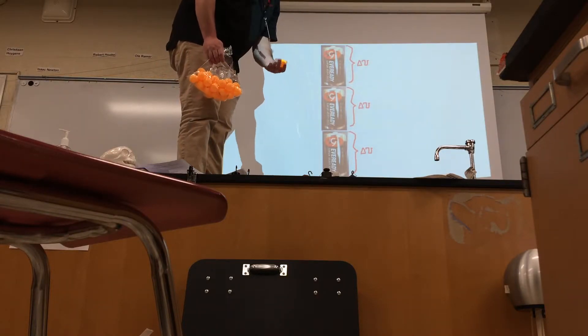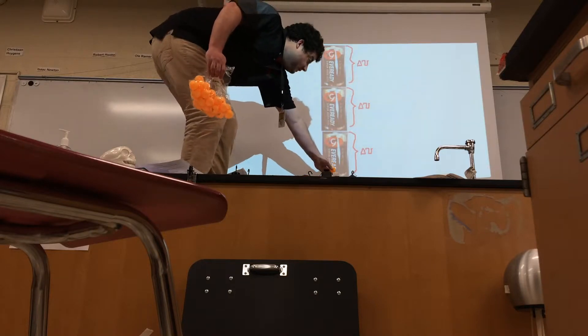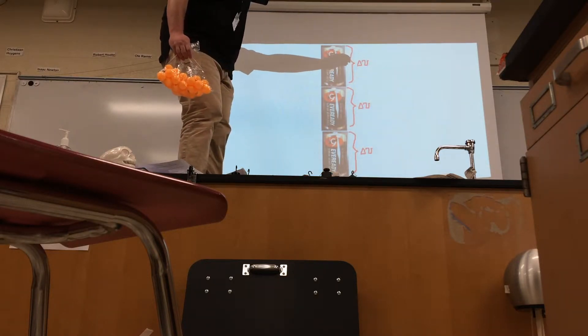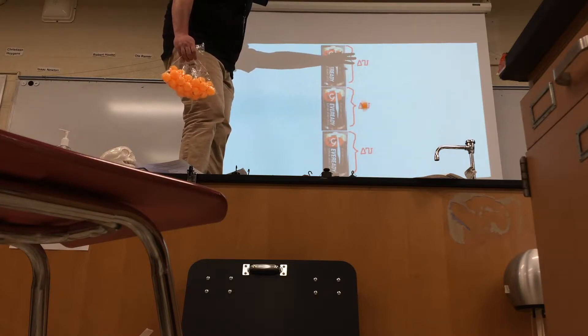So that would be 3 volts, 3 joules per coulomb. This coulomb we're going to pump up with all three. Now it has 4.5 joules per coulomb.